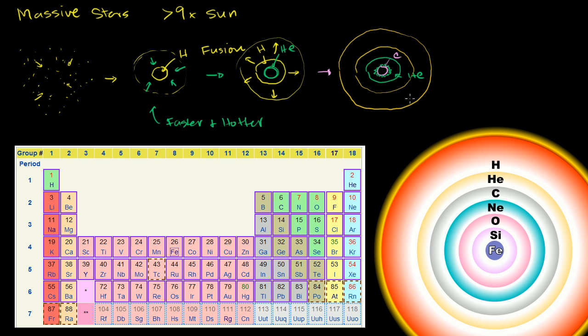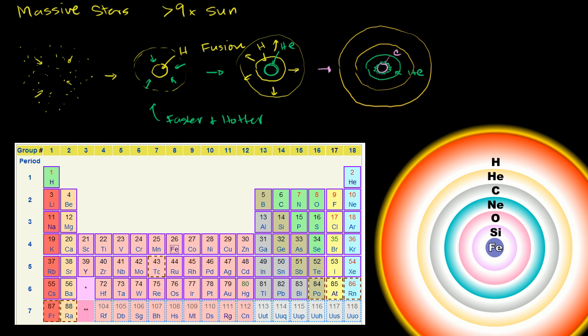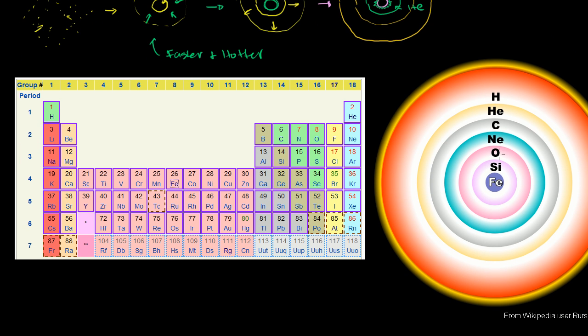And so this process is going to keep continuing. Eventually, that carbon is going to start fusing. And you're going to have heavier and heavier elements form the core. And so this is a depiction off of Wikipedia of a fairly mature massive star. And you keep forming these shells of heavier and heavier elements and cores of heavier and heavier elements until eventually you get to iron.